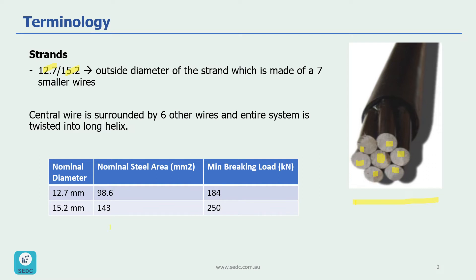In this table you can see specifications of these two strands. As mentioned, 12.7 is the nominal diameter of the strand. The steel area is 98.6 square millimeters and minimum breaking load is 184 kilonewtons. For the other strand with 15.2 millimeter diameter, the area is 143 square millimeters and minimum breaking load is 250 kilonewtons.